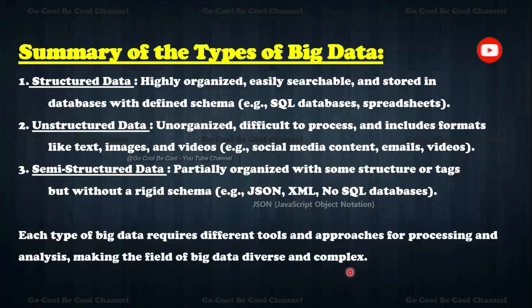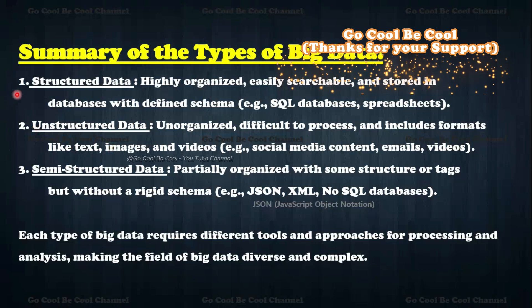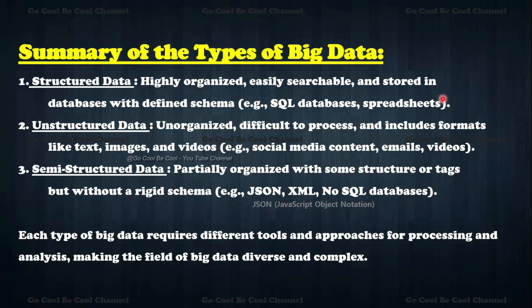To summarize the types of big data: structured data is highly organized, easily searchable, and stored in databases with a defined schema — SQL databases and spreadsheets. Unstructured data is disorganized, difficult to process, and includes formats like text, images, and videos — for example, social media content. Semi-structured is partially organized with some tags and structure. Each type of big data requires different tools and approaches for processing and analysis, making the field of big data diverse and complex.